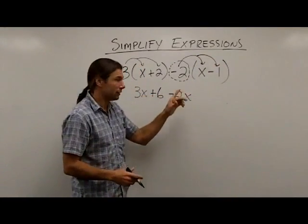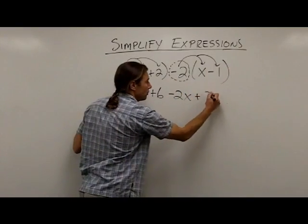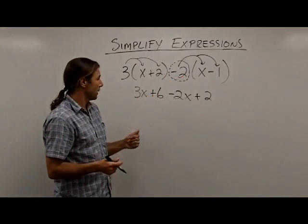And now I'm going to take this negative 2 and multiply it by the last term, which is negative 1. Notice we have same signs, negative times a negative, that's going to give me a positive 2 for my answer. So I've completed the multiplication by using the distributive property.